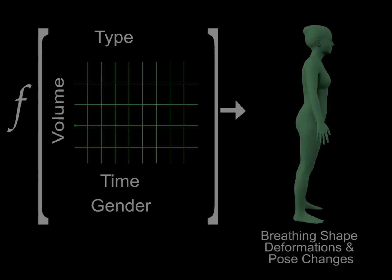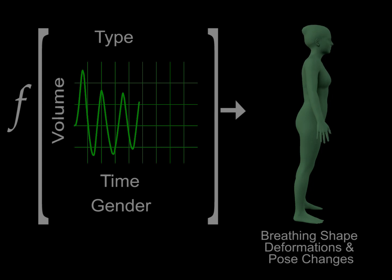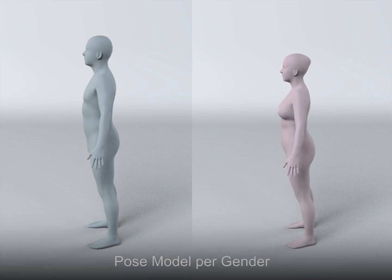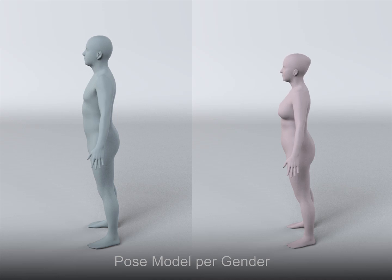We now have all we need to model breathing. We start with training examples with known breathing type and volume, as well as the corresponding linear coefficients describing pose and shape deformation. We learn a non-linear function relating the breathing controls to the pose change and deformation. We learn separate models for men and women, because we found a statistically significant difference in their postural changes during respiration. The upper body of females moves more. Interestingly, shape deformations were the same for men and women.